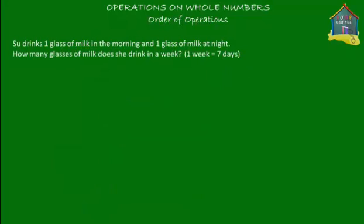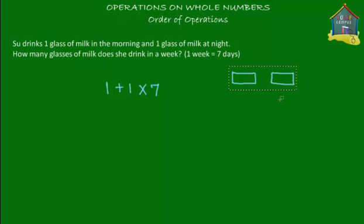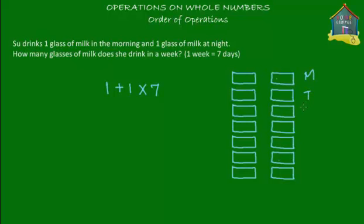Let's solve one more problem. Sue drinks one glass of milk in the morning and one glass of milk at night. How many glasses of milk does she drink in a week? A week has seven days. So the number statement is one plus one times seven. She drinks two glasses per day for seven days: Monday through Sunday, two glasses each day, giving a total of two times seven, which is 14 glasses of milk in a week.